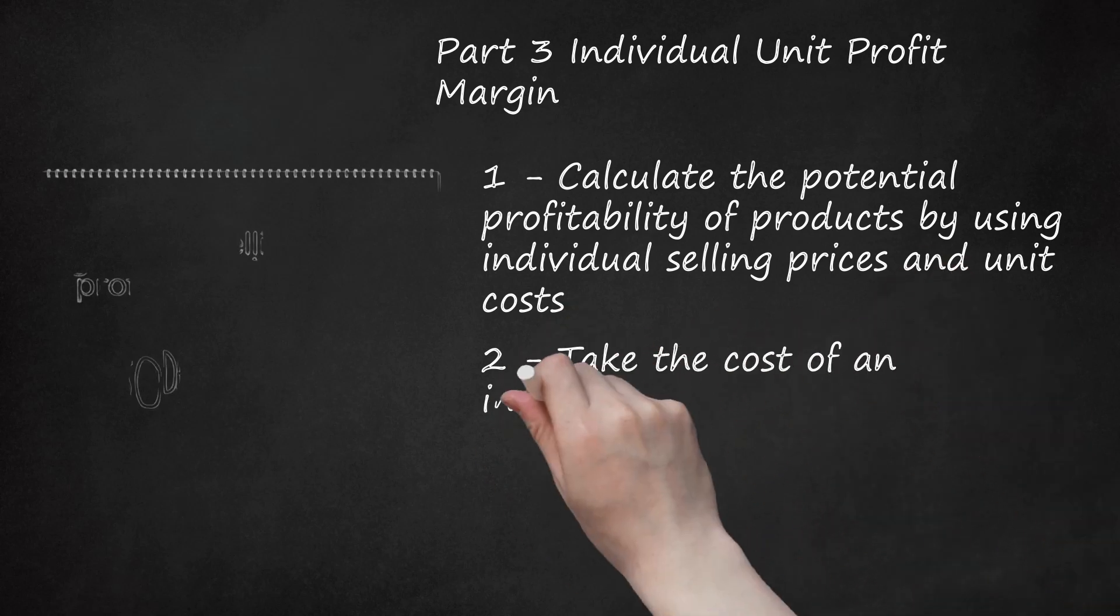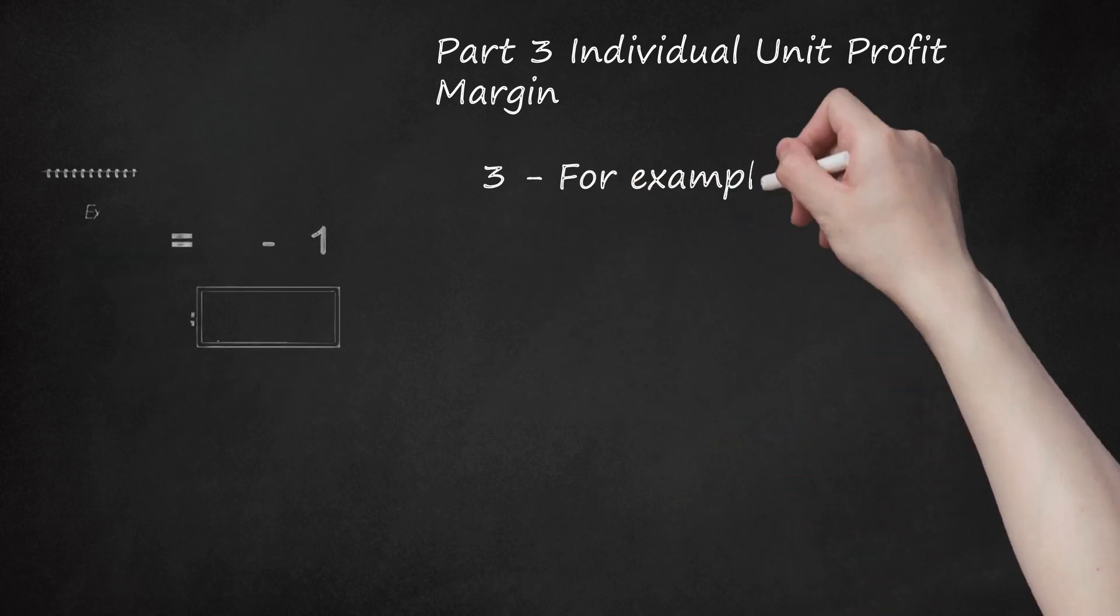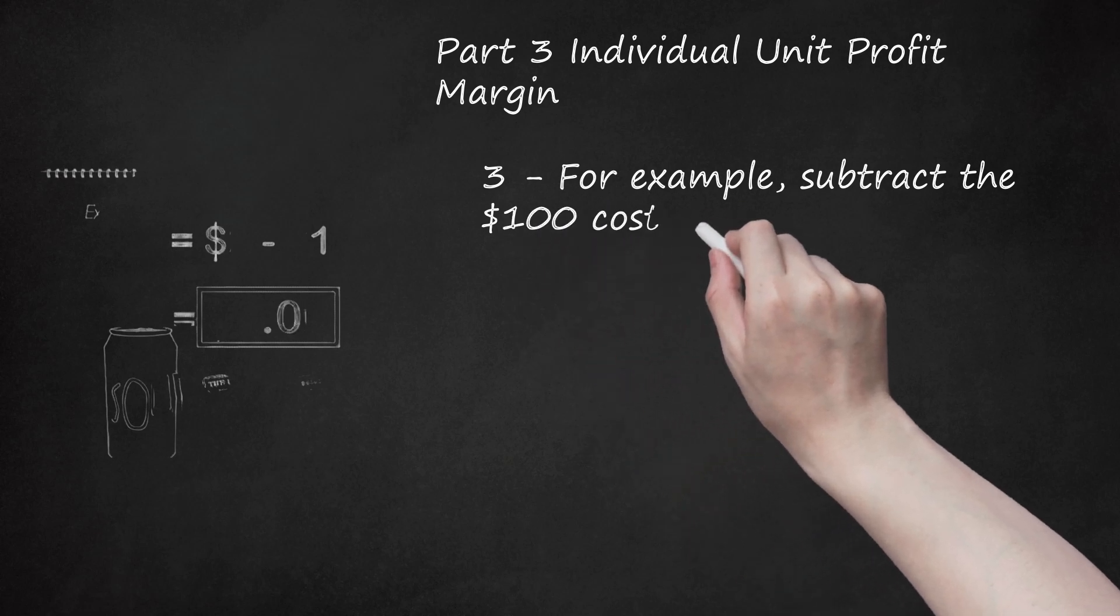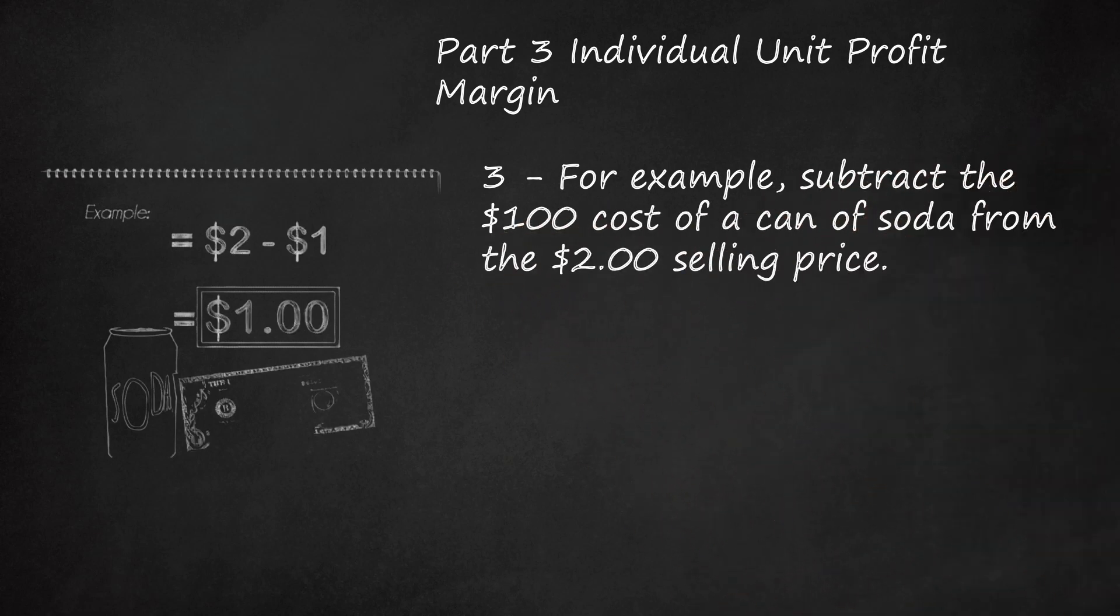Step 2: Take the cost of an individual can of soda. Subtract it from the selling price of an individual can. Step 3: For example, subtract the $1.00 cost of a can of soda from the $2 selling price. $1 is your gross profit.